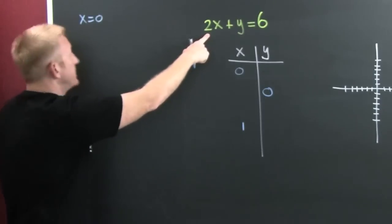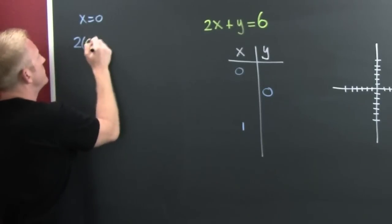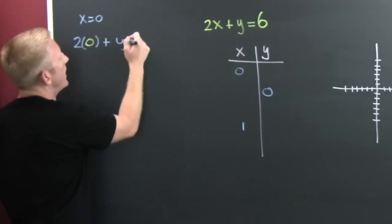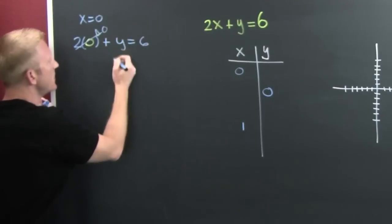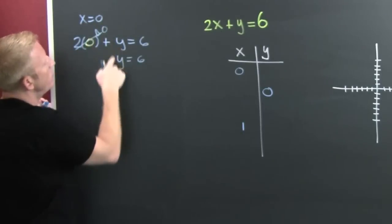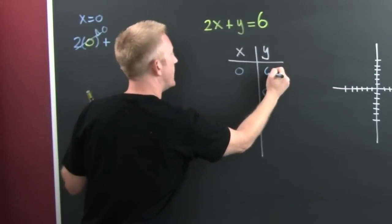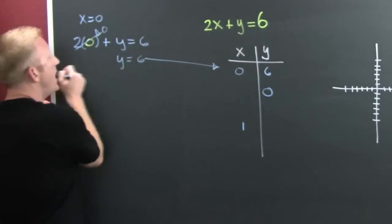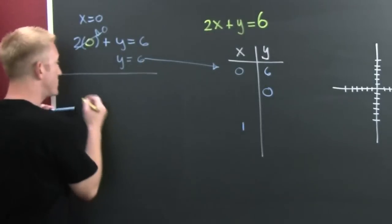When X is equal to zero, I put it into the equation: two times zero plus Y equals six. Zero is a killer, so Y equals six. When X is zero, Y is six, and I'm going to put that point right there on the graph.